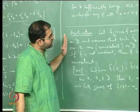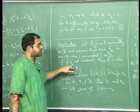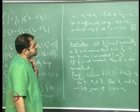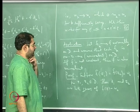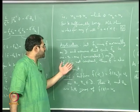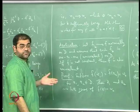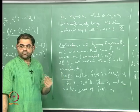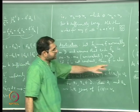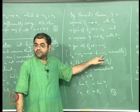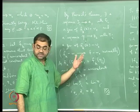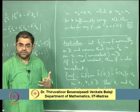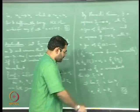Where did I use non-constancy? It is because Hurwitz's theorem does not apply when the limit function is constant. Here the limit function is f - w_0; if f - w_0 is constant that means f is constant, which is not allowed since I have already assumed f is not constant. So I can apply Hurwitz's theorem because f is not constant. We will stop here. Thank you very much.